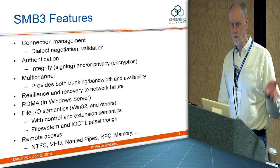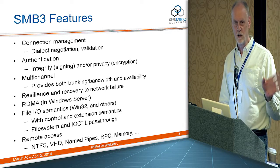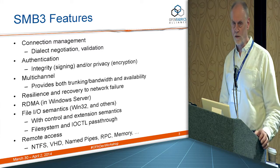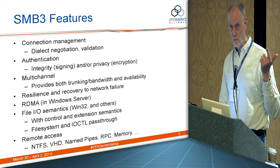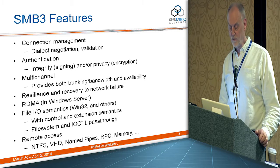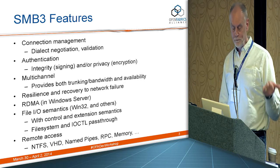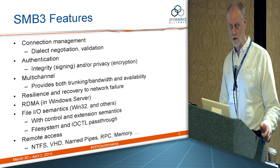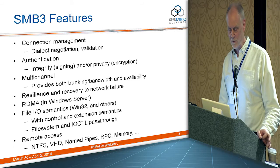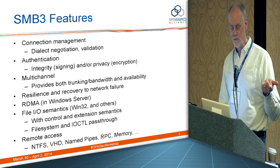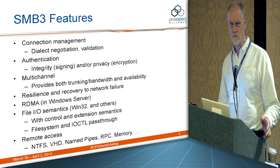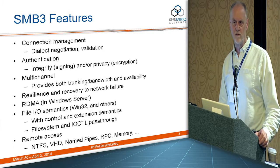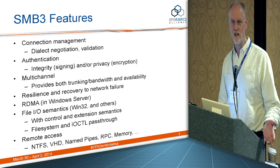Major features of SMB3: it supports full connection management with dialect negotiation and validation. Authentication — the client actually logs into the server — uses Windows Active Directory in the Windows case, and other authentication schemes are supported. It supports integrity of messages via signing as well as privacy — as of 3.02, full encryption of these messages. It supports multi-channel for trunking, bandwidth, and availability. Resilience and recovery to network failure — it recovers the network and recovers the state of all the handles that have been opened. In Windows Server it supports RDMA, which is what I'm going to talk about here. Full file IO semantics with control and extension semantics, file system and IOCTL pass-through. These are things that other file systems often don't do. It supports a sort of arbitrary protocol-within-protocol, and that can be used to support many things. RPC, for instance, is one of these pass-through operations over SMB — it's used as a transport.